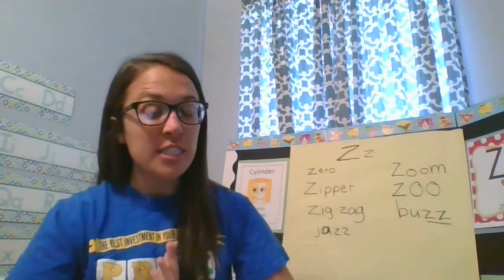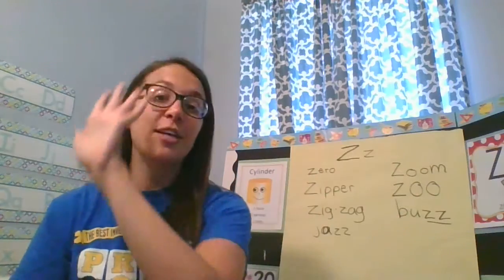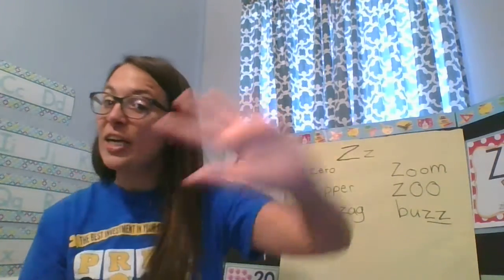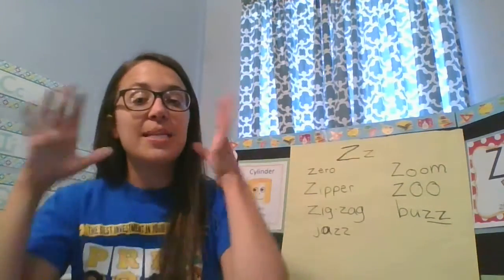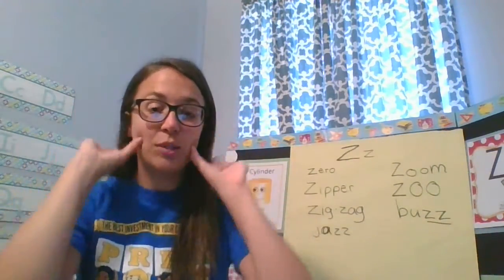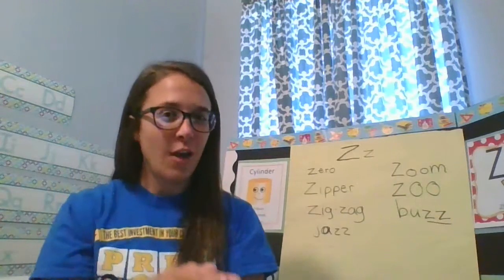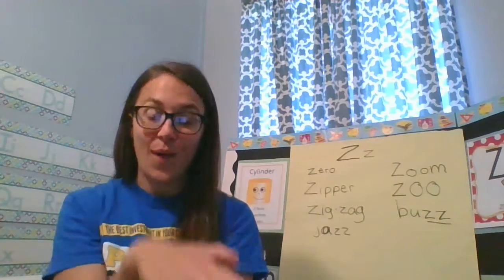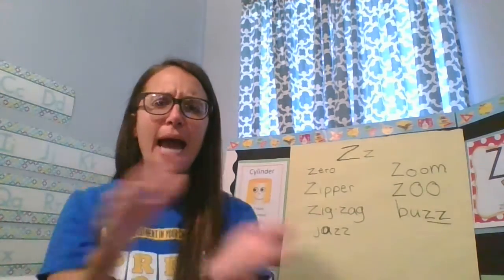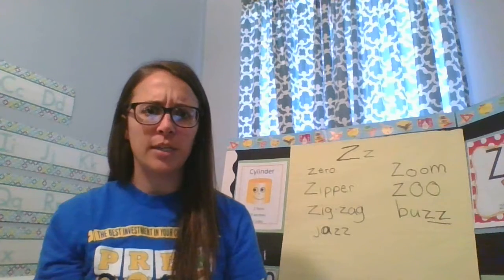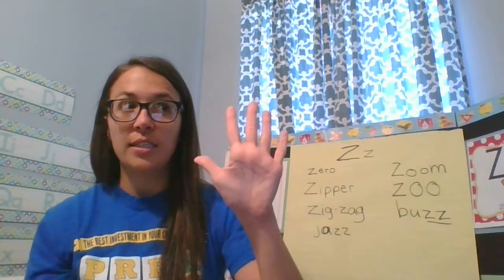The first one we're going to sing is just a fun one. We're going to sing Five Little Monkeys. Five Little Monkeys swinging on a tree, teasing Mr. Alligator, can't catch me, along came Mr. Alligator, quiet as can be, and snap that monkey right out of that tree. There's five monkeys and he ate one. How many monkeys are there? Four.